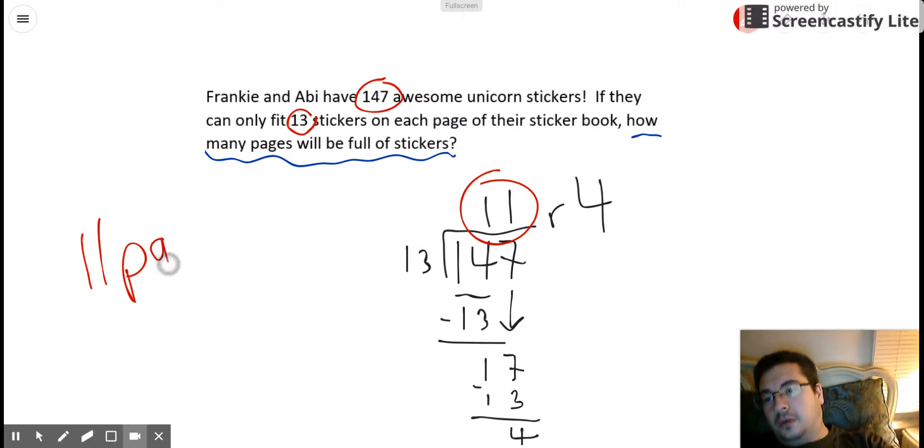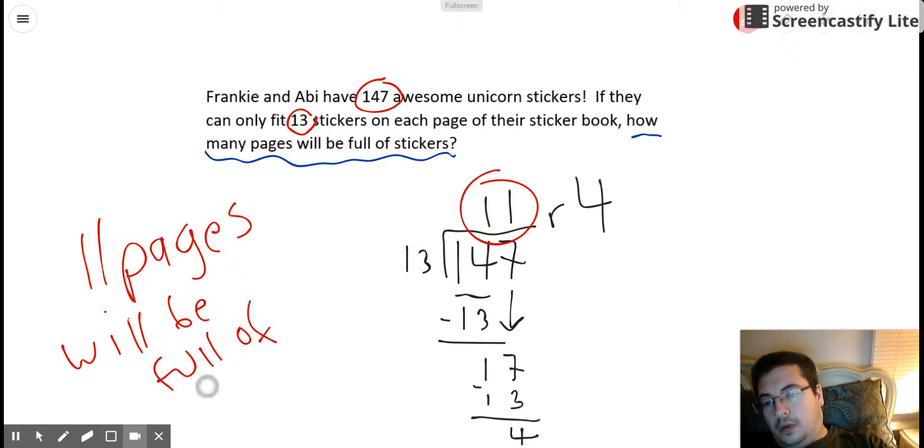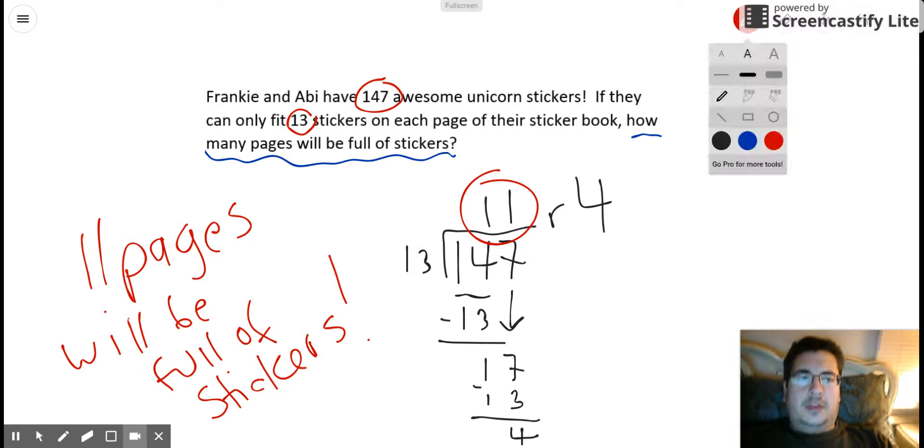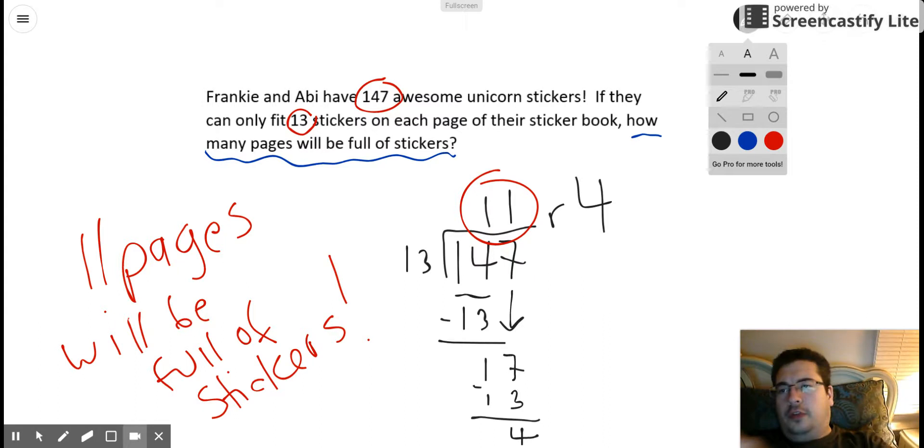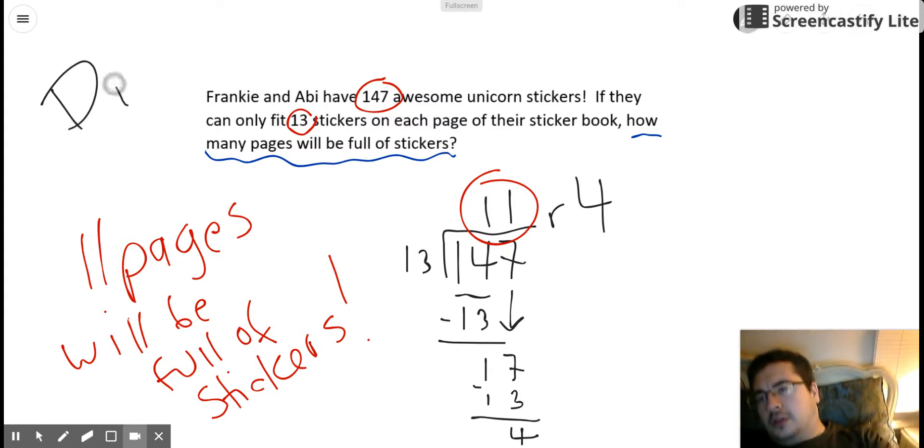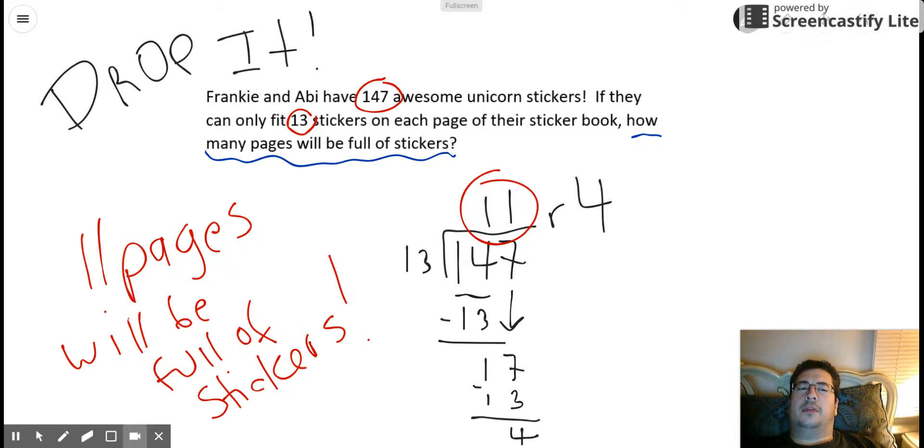And this type of division problem where we are interpreting the remainder, we can call this 'drop it.' So this is an example when we do not include the remainder as part of our answer to the question. This is an example of dropping the remainder.